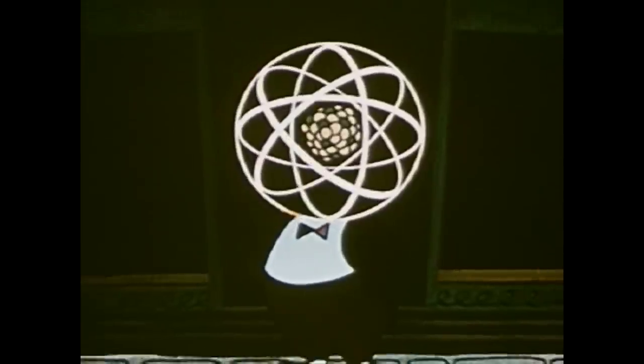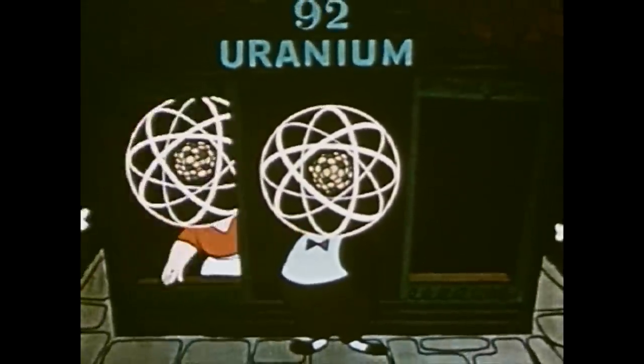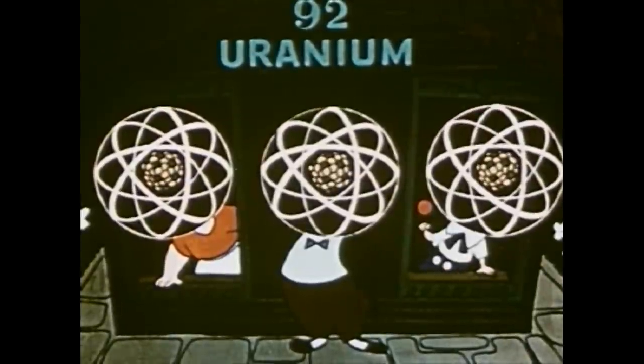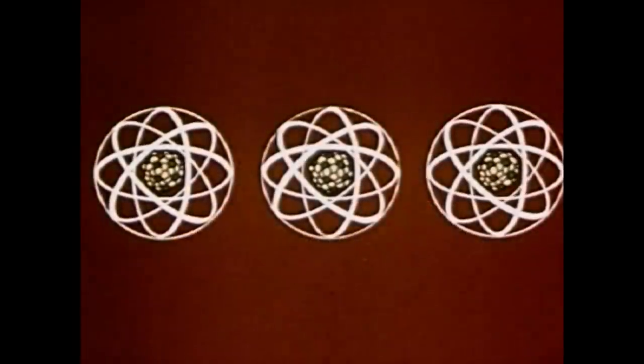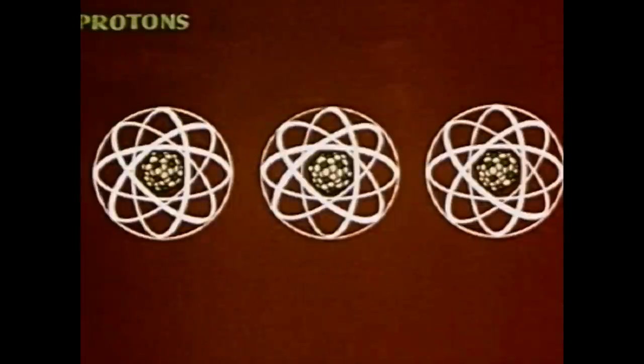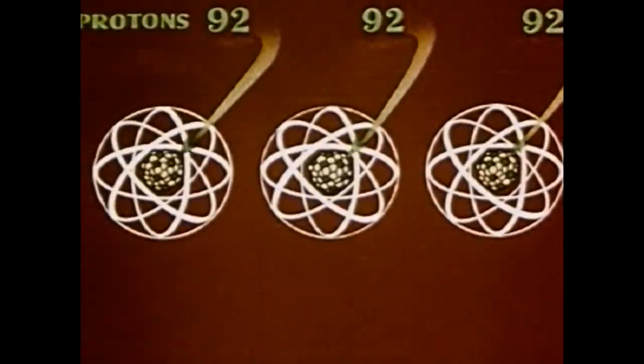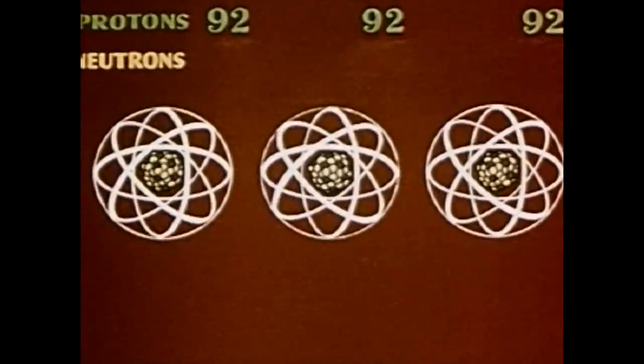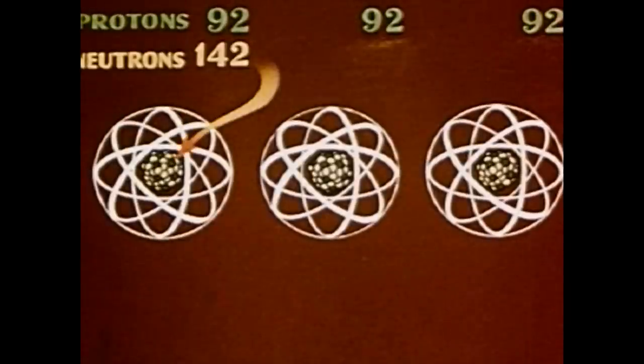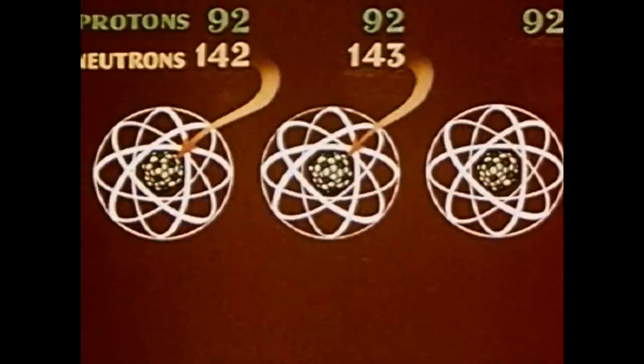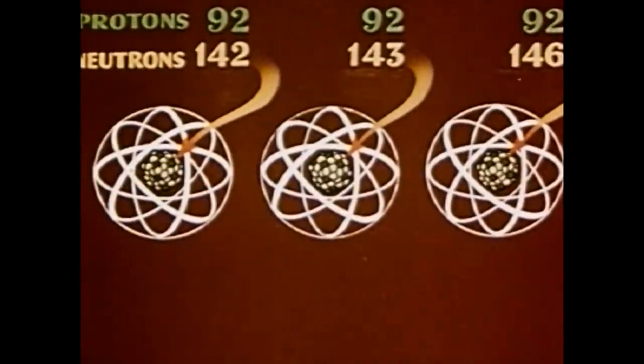For any given element, the number of protons must remain the same, but the number of neutrons may vary. The atomic weight of an atom is the number of protons plus the number of neutrons. Natural uranium may contain 142, 143, or 146 neutrons.